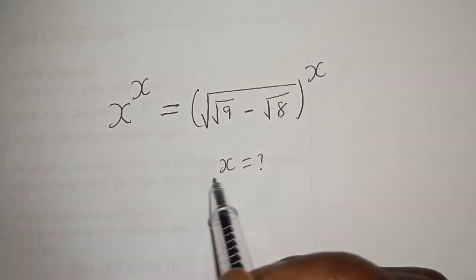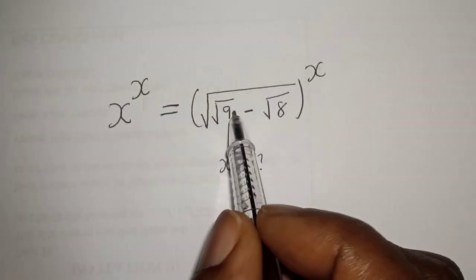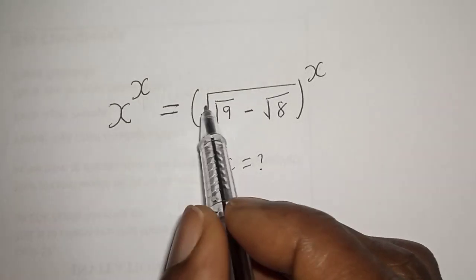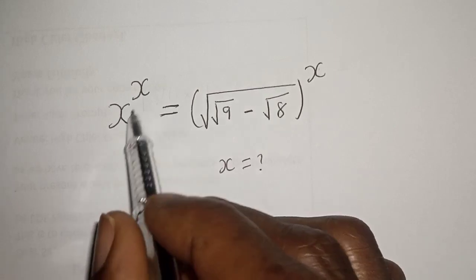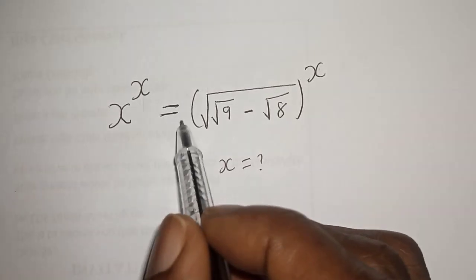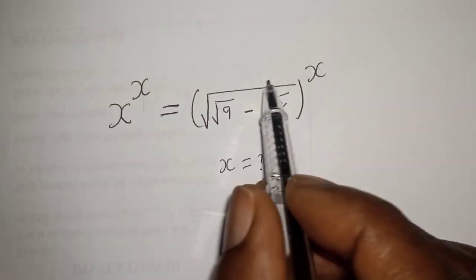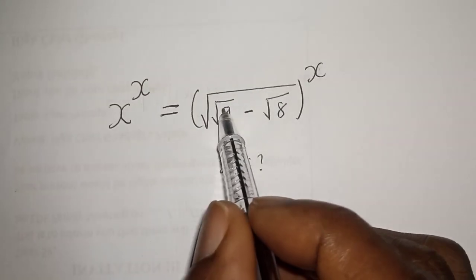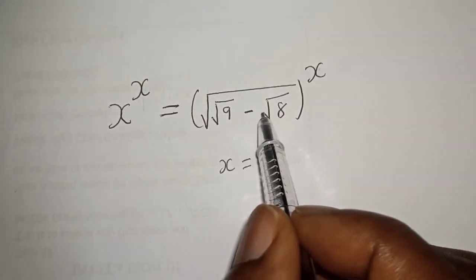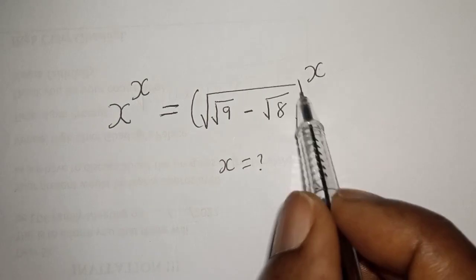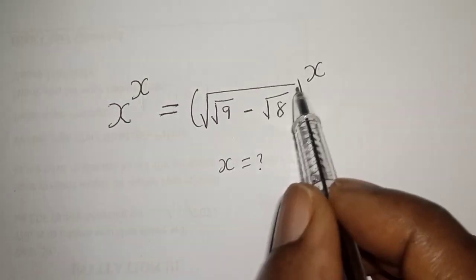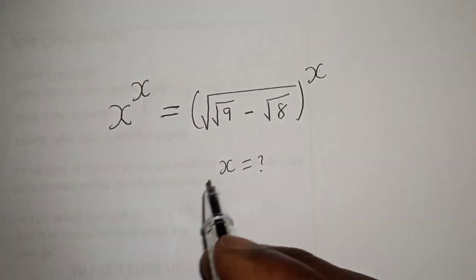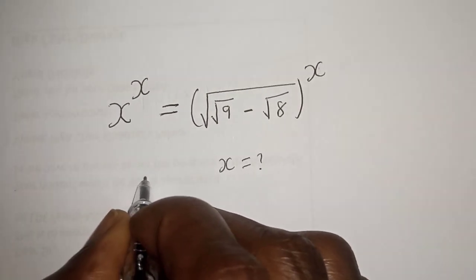Hello. How to solve for s from this given math problem: s raised to the power s is equal to the square root of the square root of 9 minus square root of 8, all to the power of x. Solution.